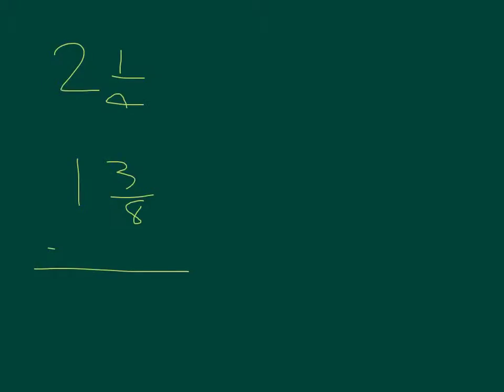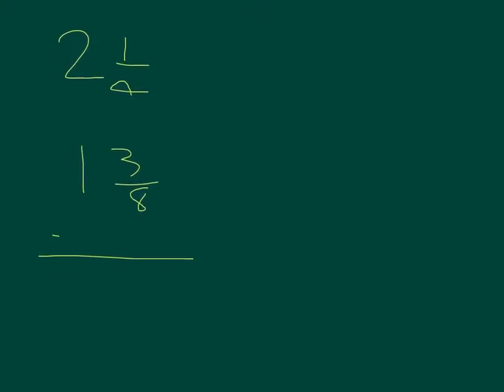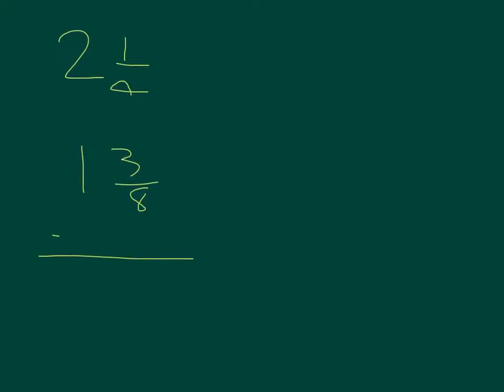Your first step will be to line your fractions in vertical form like this. After you've done that, you will need to find your common denominator. And 4 times 2 equals 8. And you always multiply the numerator by the same thing as the denominator. And 1 times 2 equals 2.